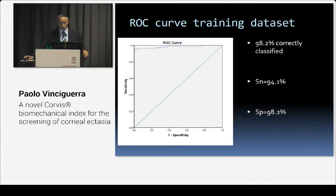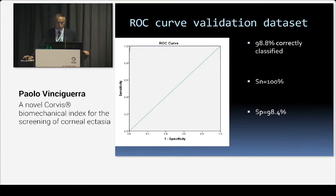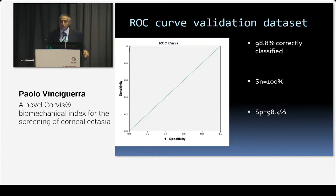This is the ROC curve for the training dataset: 98% correctly classified, sensitivity 94%, specificity 98.2%. The validation dataset performed even better — 98.8% correctly classified, sensitivity 100%, specificity 94%. This demonstrates there is no overfitting and the index is highly sensitive.